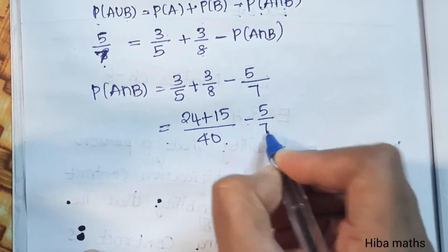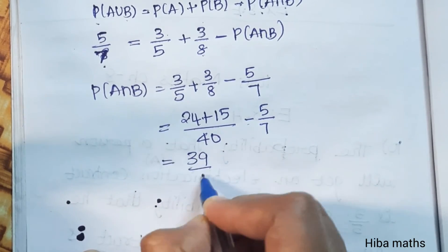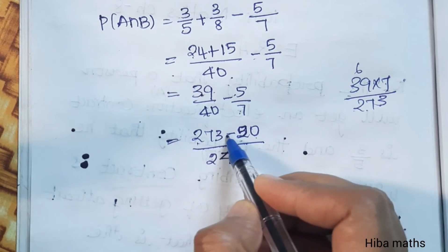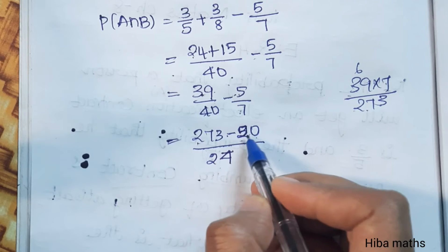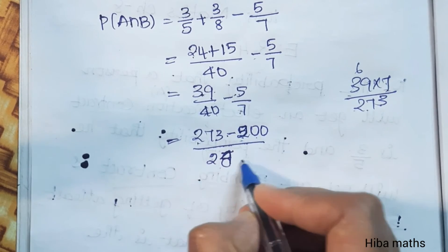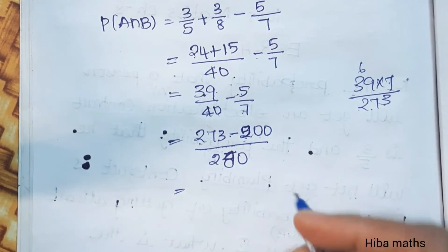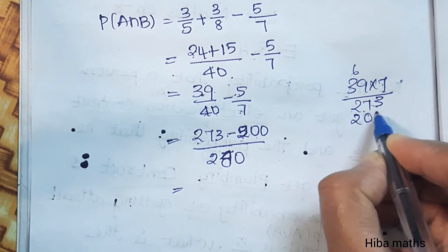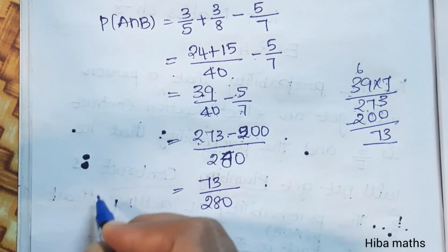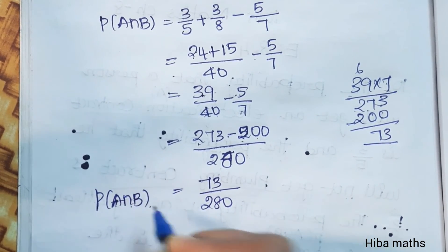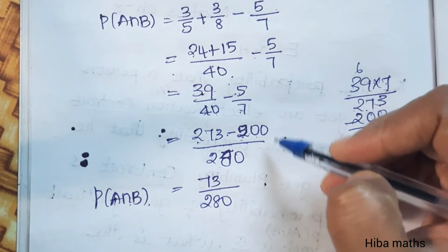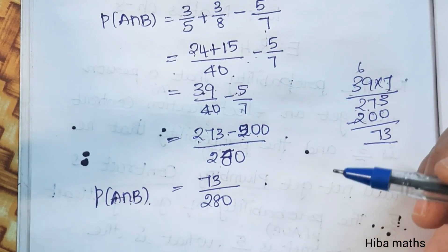So total 39 by 40 minus 5 by 7. 7 into 39 is 273. 5 times 40 is 200. 7 times 40 is 280. So 273 minus 200 equals 73. Therefore 73 by 280. This is P of A intersection B - the person gets both the contracts, 73 by 280.